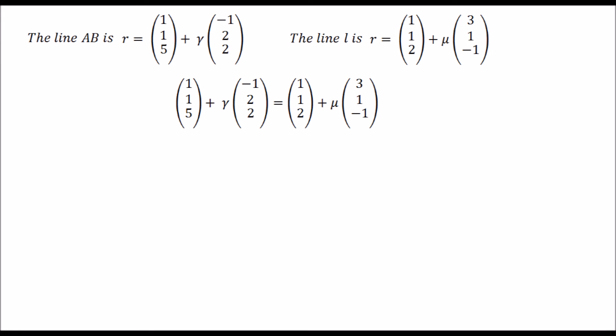Let's simplify these up and we end up with three equations. Now all that is needed is to take any two of the three equations and solve them to find the value of the scalar constants gamma and mu, and substitute those in the equation which we did not use.